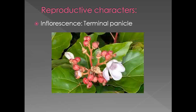Moving towards the reproductive characters — under which we study the type of inflorescence, flowers, calyx, corolla, perianth if calyx and corolla are absent, androecium, gynoecium, fruit, and type of seed. Family Bixaceae is characterized by presence of a panicle type of inflorescence. This inflorescence is a panicle type and is present at the terminal side. That's why the inflorescence is a terminal panicle type.